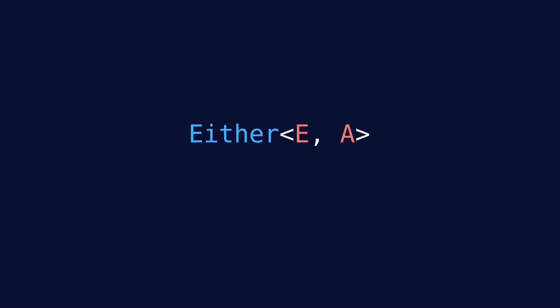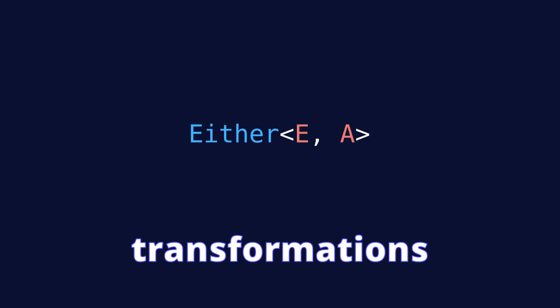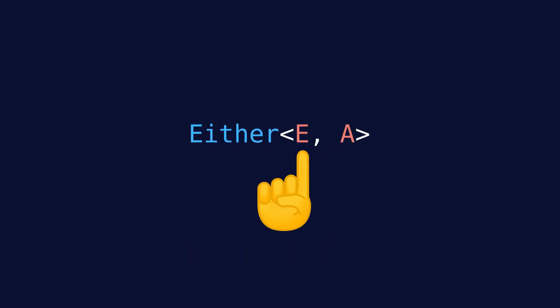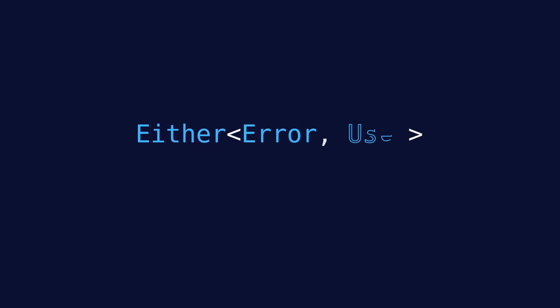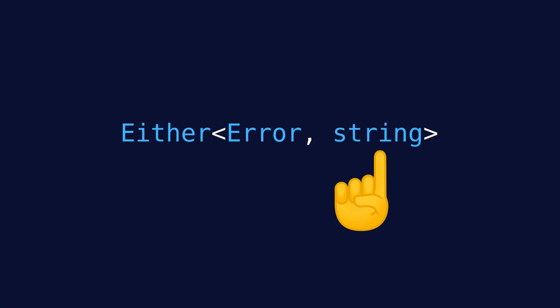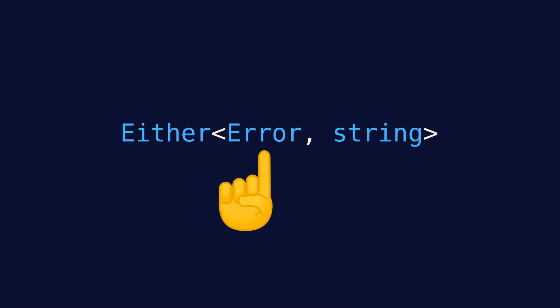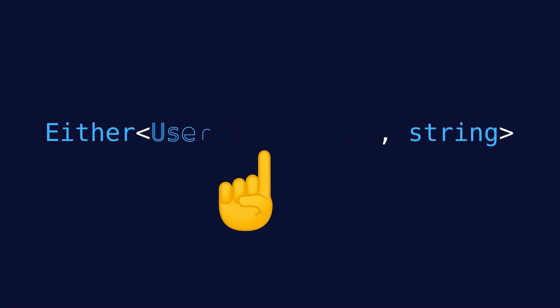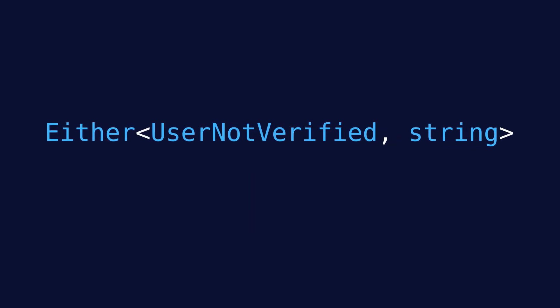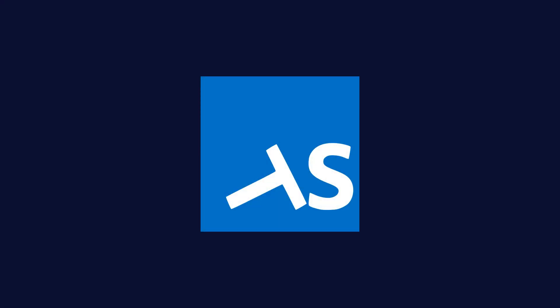Often, when working with Either, we need to do transformations on the right or the left value. For example, if we have an Either of error or user, we might want to map the user to its username, which is a string, and we might want to map the error to a more specific error, like user not verified. Let's see a concrete example of how we can do these kind of mappings on an Either's value using the utils that fp-ts provides.